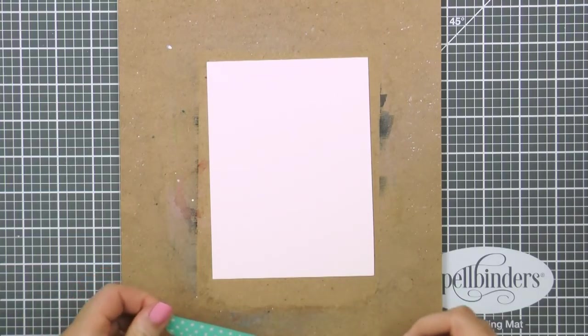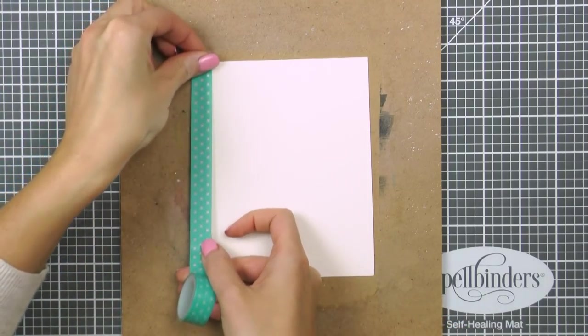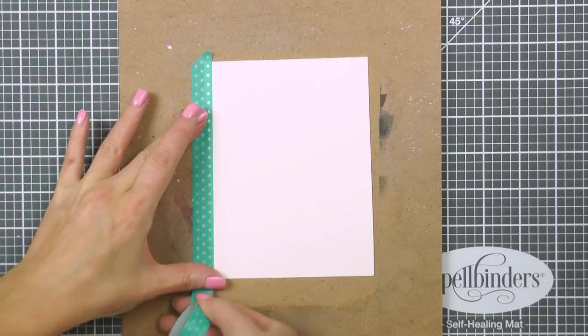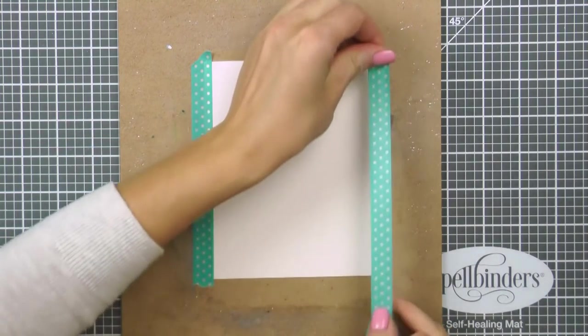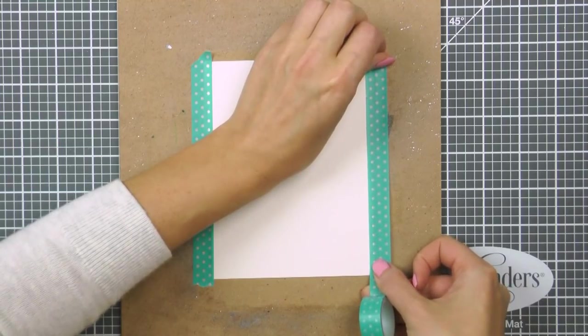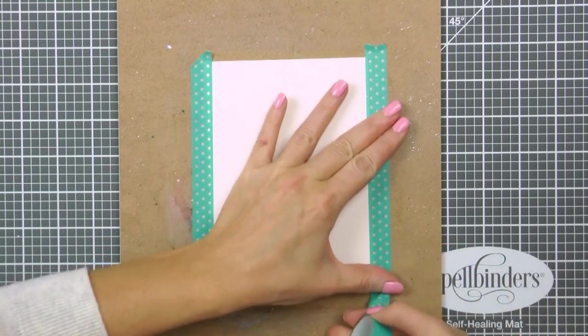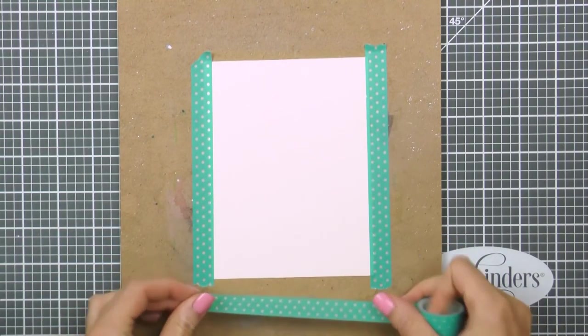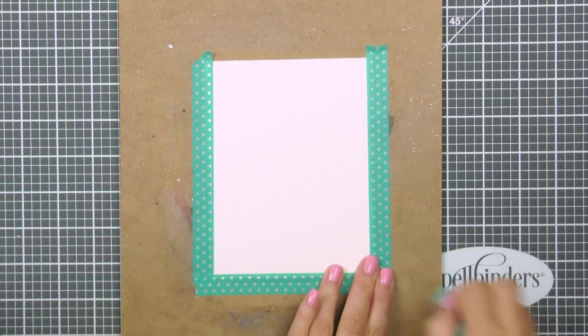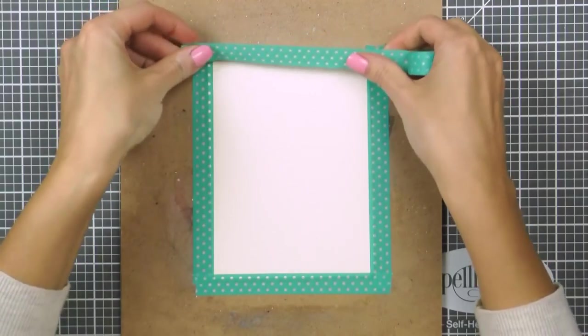I have a sheet of Arches hot pressed watercolor paper here. I love this paper for all things watercolor. I'm going to tape my paper onto the board. I use any low tack tape for this that I can find, in this case I'm using my old washi tape and taping the paper onto the board helps it to stay as flat as possible. I'll be adding lots of water here so I need to make sure that my paper is not going to warp too much.